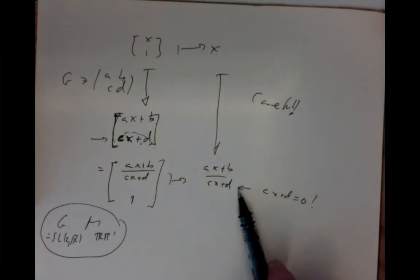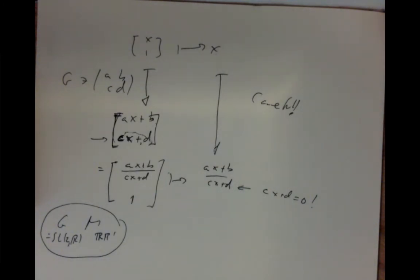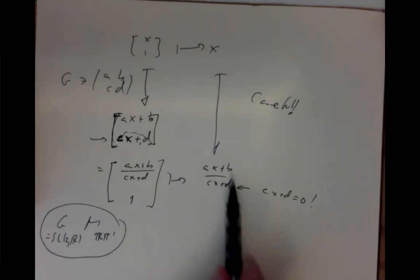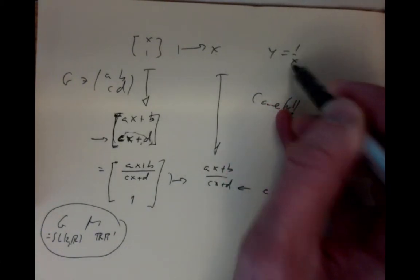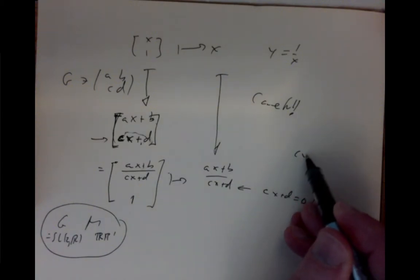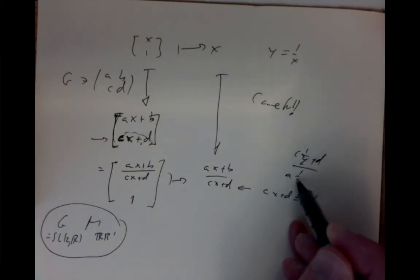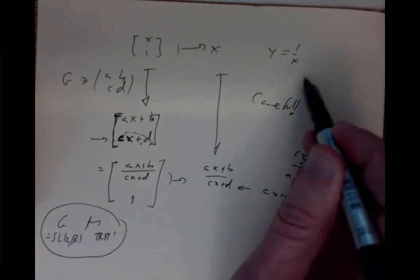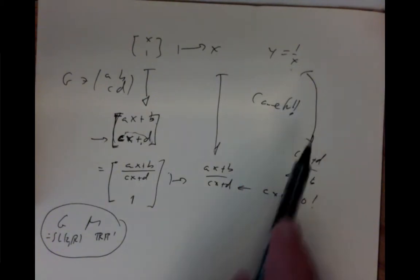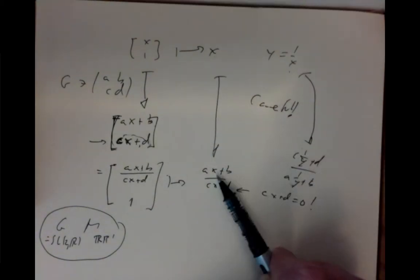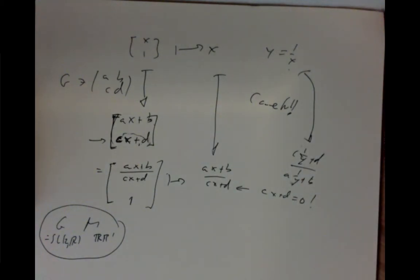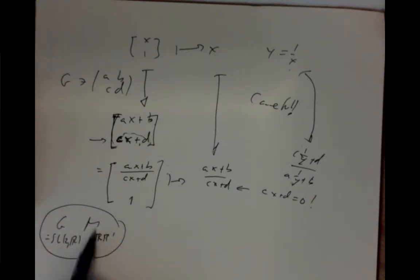When cx+d = 0, you're moving to a point not in the x-chart. Using the other chart with y = 1/x, the expression becomes (c/y + d)/(a/y + b), which simplifies to give the action in the y-chart. So the action is defined in one chart or the other, and since the global action on RP^1 is globally defined, both charts together cover everything.